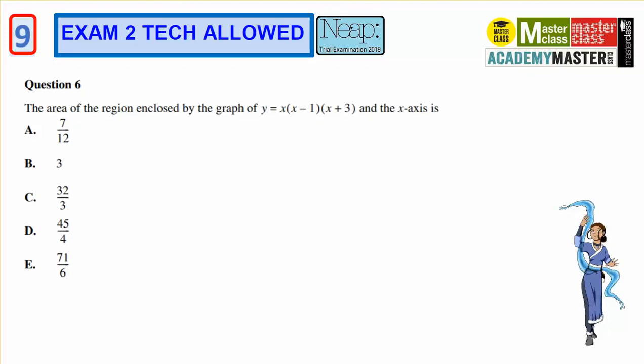This is for methods, question number nine in the master class of exam prep, question number six for the multiple choice. The area enclosed by this graph and the x-axis.